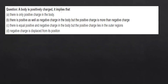A body is positively charged — what does this imply? Option A: there is only positive charge on the body. Option B: there is positive as well as negative charge on the body but the positive charge is more than the negative. Option C: negative charge is displaced from its position. Option B is also correct because when we charge a body positively, it has both positive and negative charges but the positive quantity is greater.